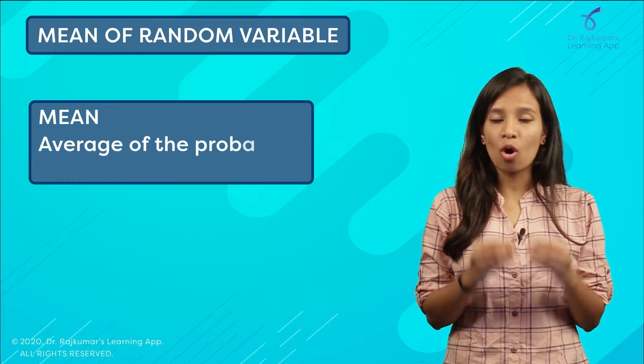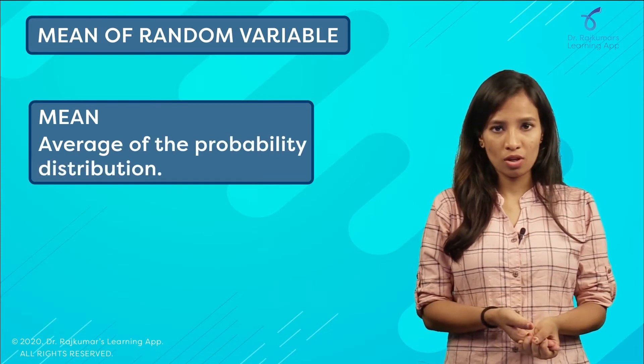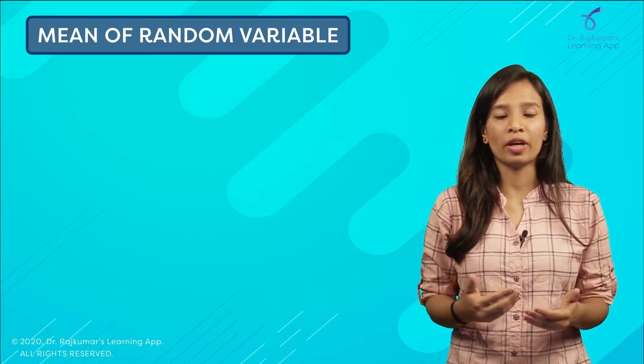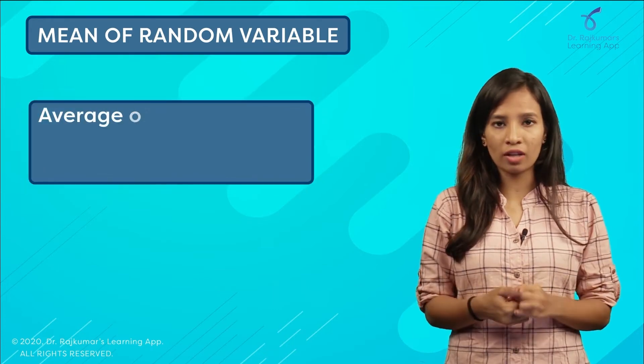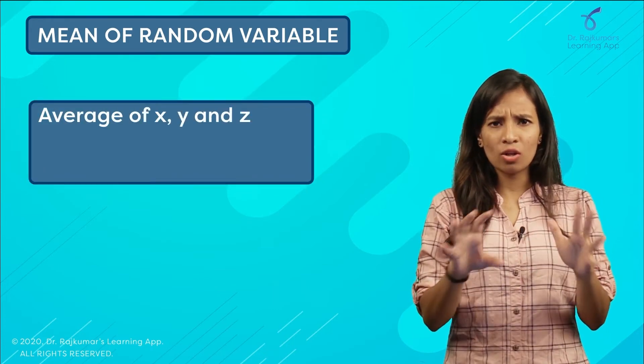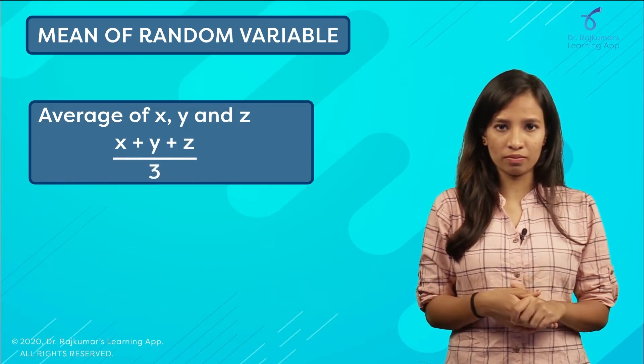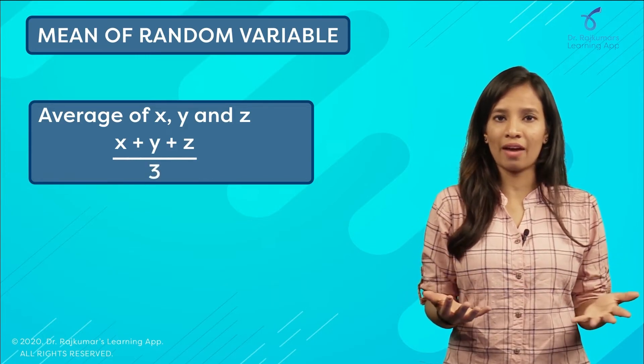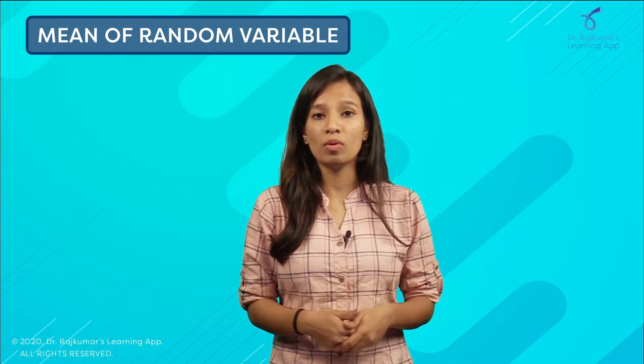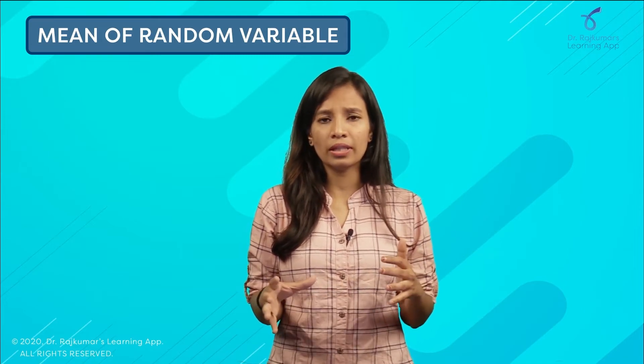Mean means average of our probability distribution. Normally, when you're asked to find the average of anything, you add your outputs and divide by the number of outputs. Here in a probability distribution, you do it in a little different way.